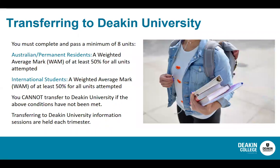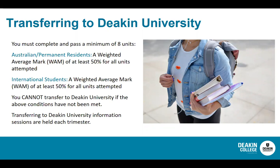Upon completing your diploma and passing those eight units, you need to achieve a certain WAM — a weighted average mark — which is an average of those eight credit-bearing units. For this particular course, you need to achieve at least 50% for all of those units, and that applies to both Australian domestic students and international students. You cannot transfer to Deakin University if you have not achieved that weighted average mark of 50. We hold transfer sessions each trimester to help students prepare for their transfer to the bachelor degree.